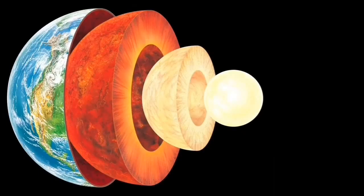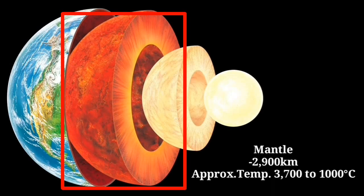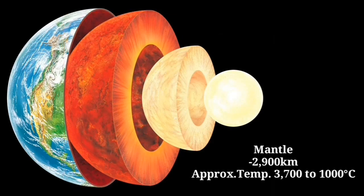Below the crust is the mantle, which has an average thickness of 2,900 kilometers and an approximate temperature of 1,000 to 3,700 degrees Celsius. Here the geothermal gradient remains below the melting temperature of rock, except in the asthenosphere where rocks are softened and become plastic. The gradient then drops off dramatically through the mantle and increases more quickly at the base of the mantle.